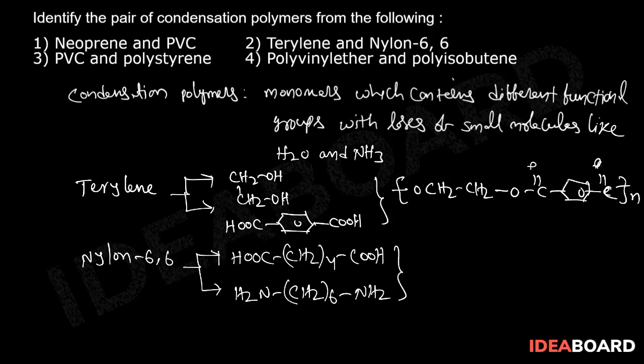This is an example of polyamide which contains two functional groups: carboxylic acid and primary amine. The structure is CO-(CH2)4-CO-NH-(CH2)6-NH repeating. It is a polyamide, so the answer is terylene and nylon 6,6. The second option is the correct answer.